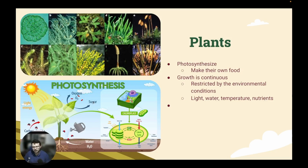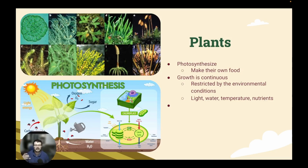If you look at this diagram on the bottom left, this is a basic example of how photosynthesis works. They interact with the sun, they collect light from the sun, that light then goes through what we call the light reactions, producing energy in their chloroplast. That's as much as you need to know right now.